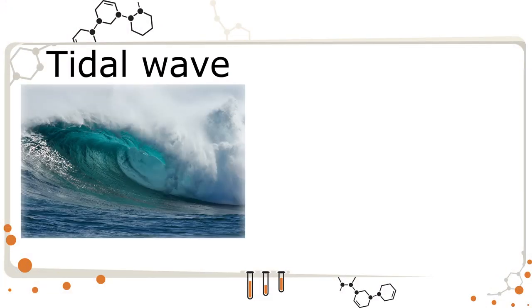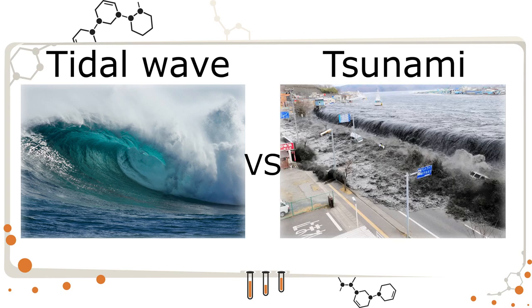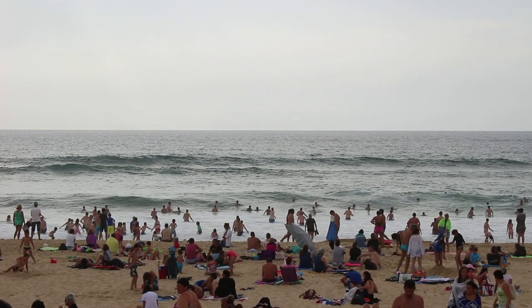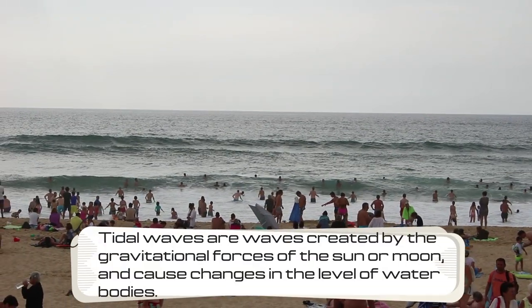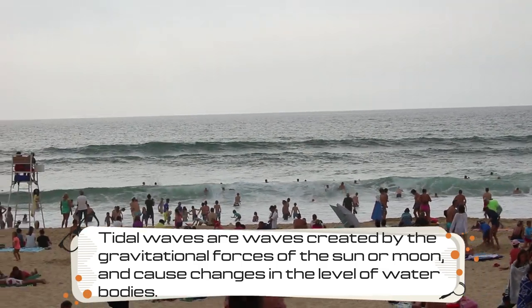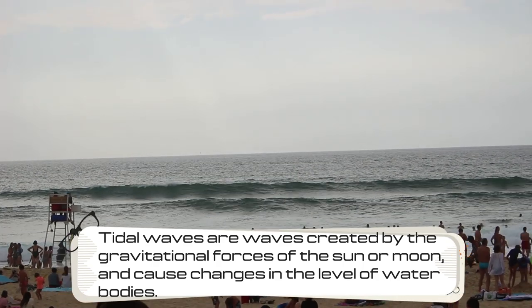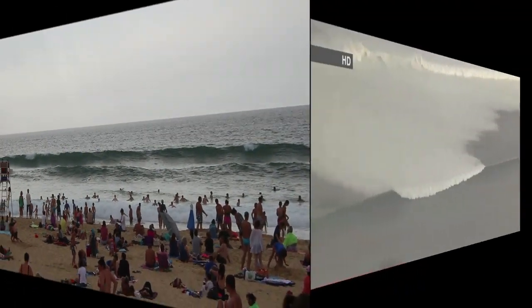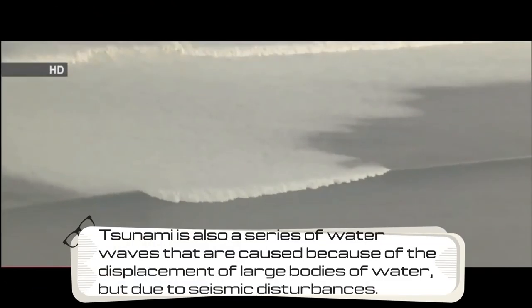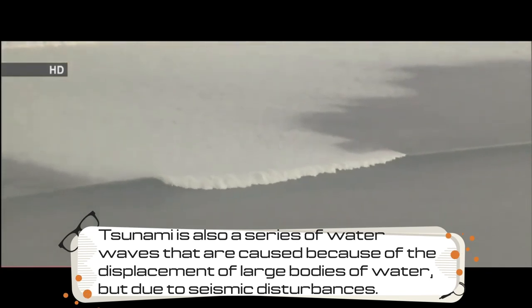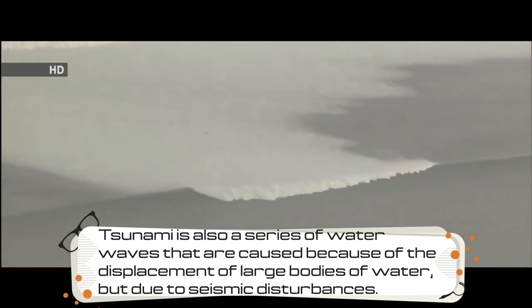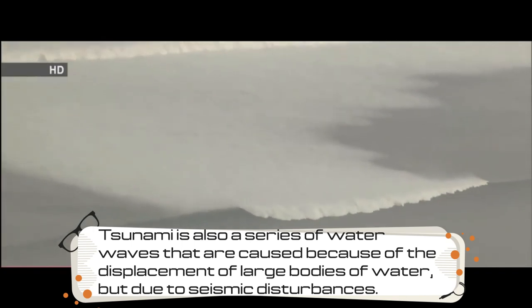Welcome to Top Topic Channel. In this video I will explain the difference between tsunami and tidal wave. Tidal waves are waves created by the gravitational forces of the sun or moon and cause change in the level of water bodies. Tsunami is also a series of water waves caused by the displacement of large bodies of water, but due to seismic disturbances.